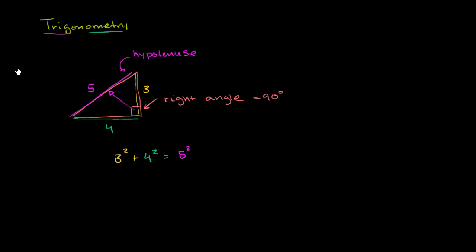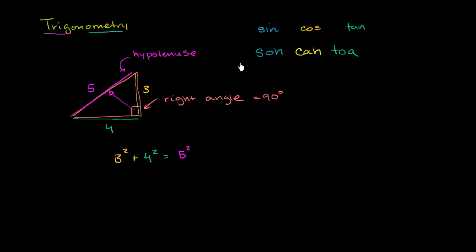Now with that out of the way, let's learn a little bit of trigonometry. The core functions of trigonometry are: the sine function, the cosine function, and the tangent function. You write them as sin, cos, and tan for short. And these specify, for any angle in a triangle, the ratios of certain sides. There's a mnemonic to help you remember the definitions of these functions — it's called SOHCAHTOA. You'll be amazed how far this mnemonic will take you in trigonometry.